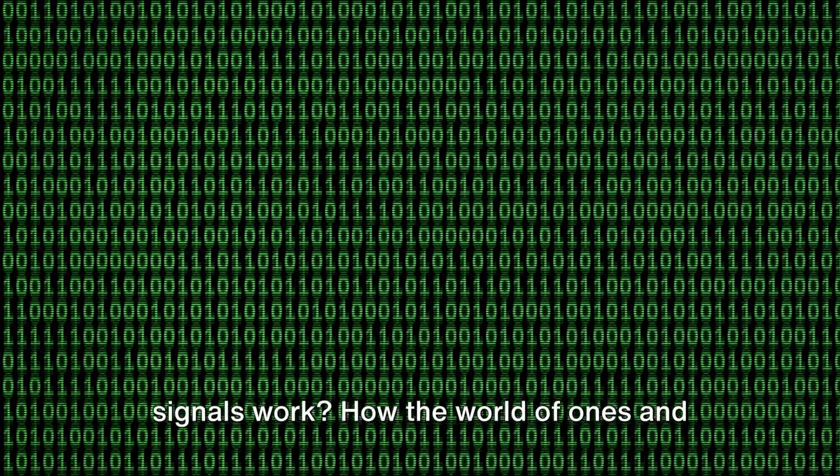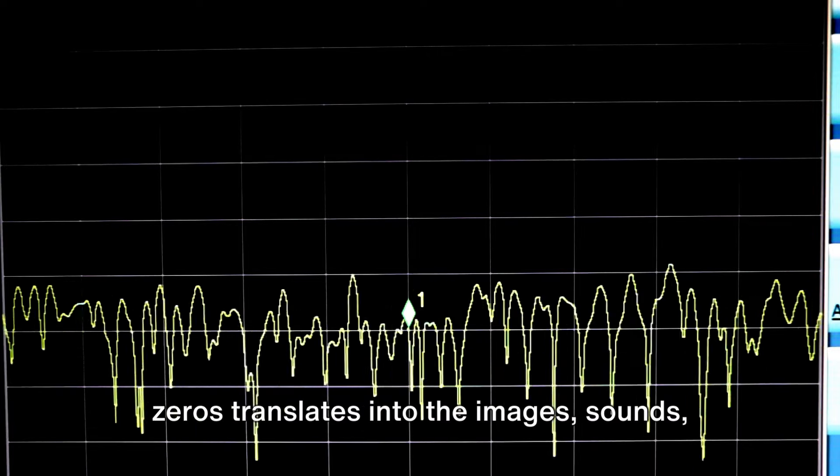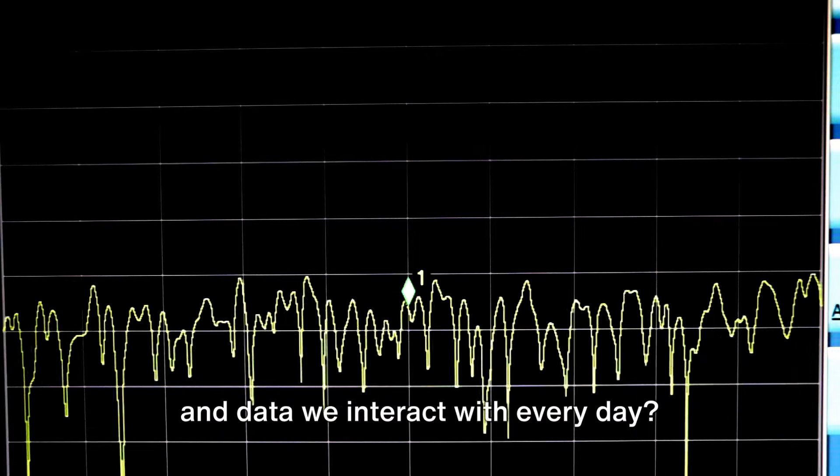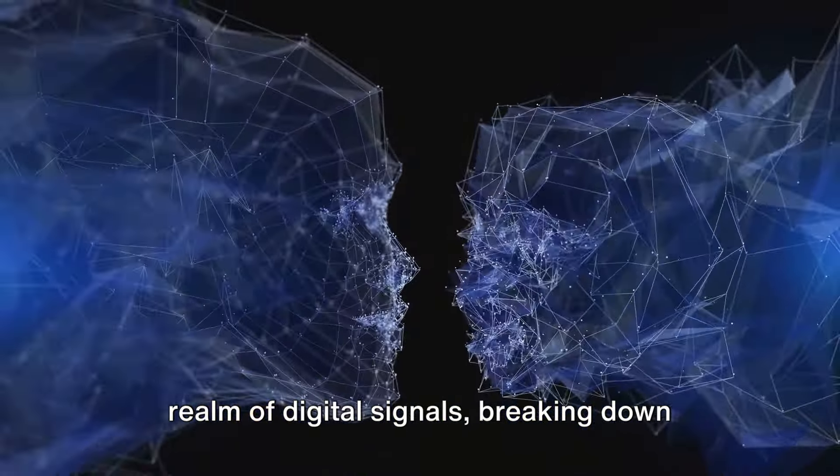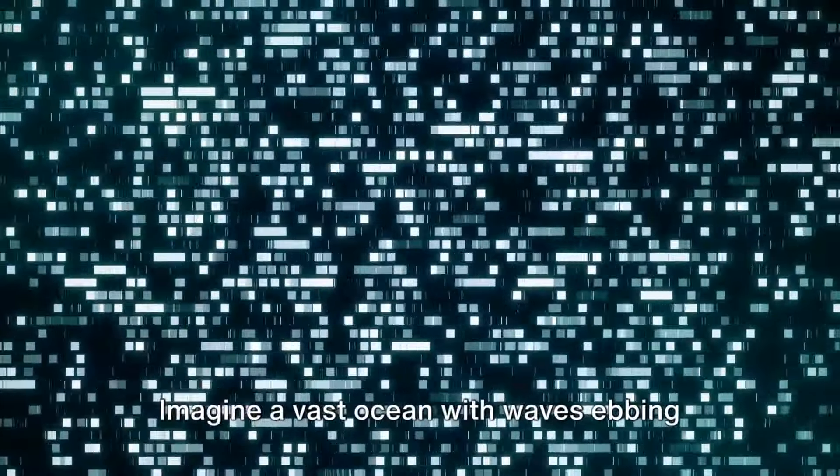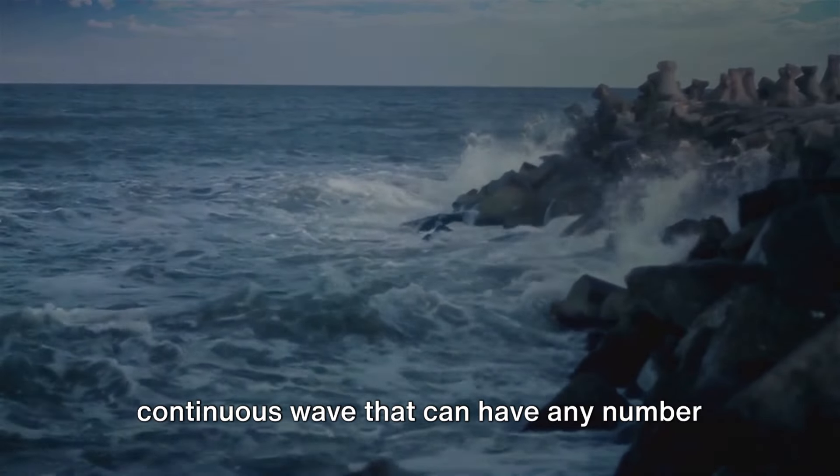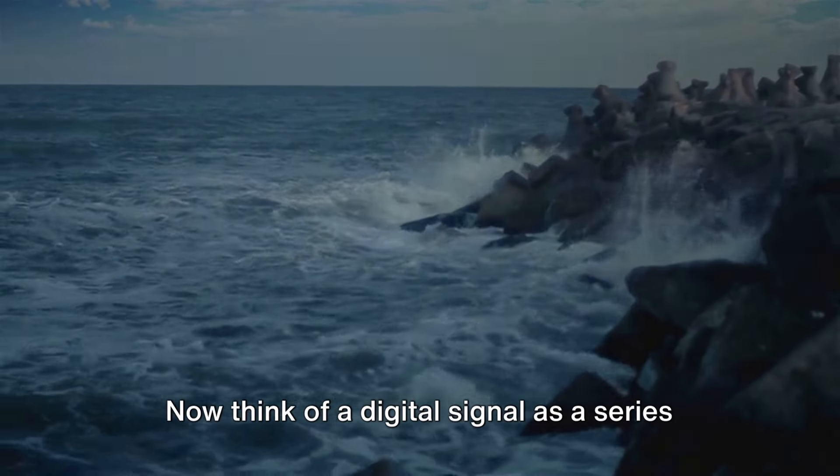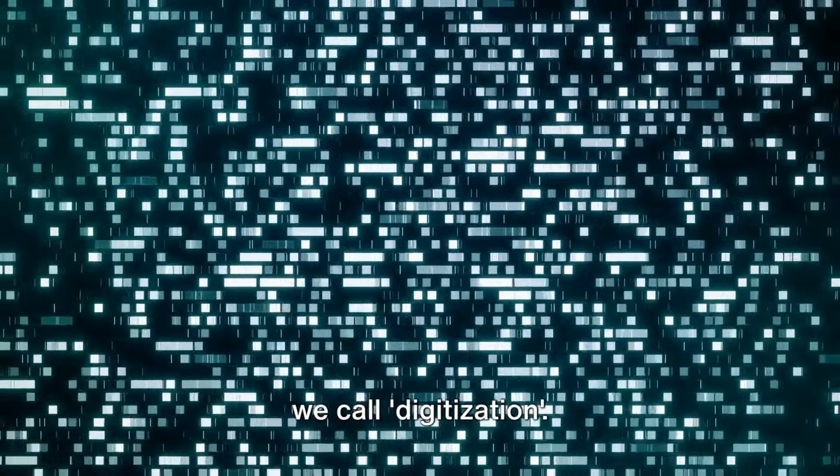Have you ever wondered how digital signals work? How the world of 1s and 0s translates into the images, sounds, and data we interact with every day? Today we're diving into the fascinating realm of digital signals, breaking down this complex concept into digestible parts. Imagine a vast ocean with waves ebbing and flowing. This could represent an analog signal—a continuous wave that can have any number of values. Now think of a digital signal as a series of steps, each step representing a different value. This process of transforming the ocean waves into a staircase of values is what we call digitization.